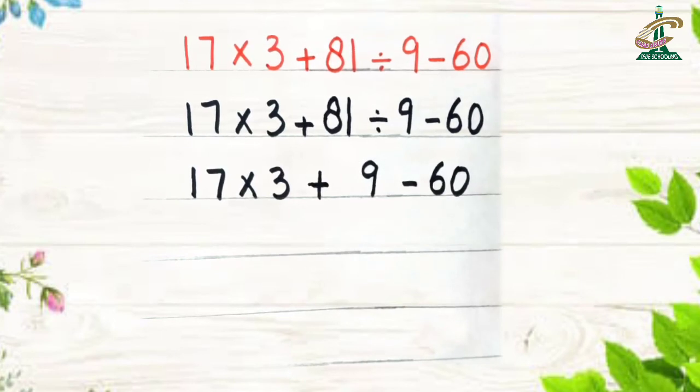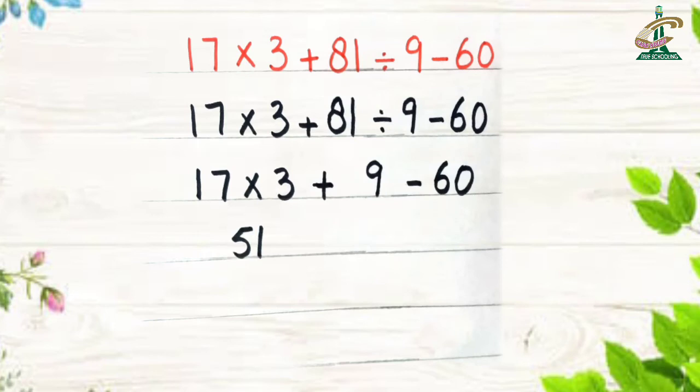Now what we will do? We will multiply according to the DMAS rule. Where is the multiplication sign? Between 17 and 3. 17 threes are 51. Write down remaining values as it is.